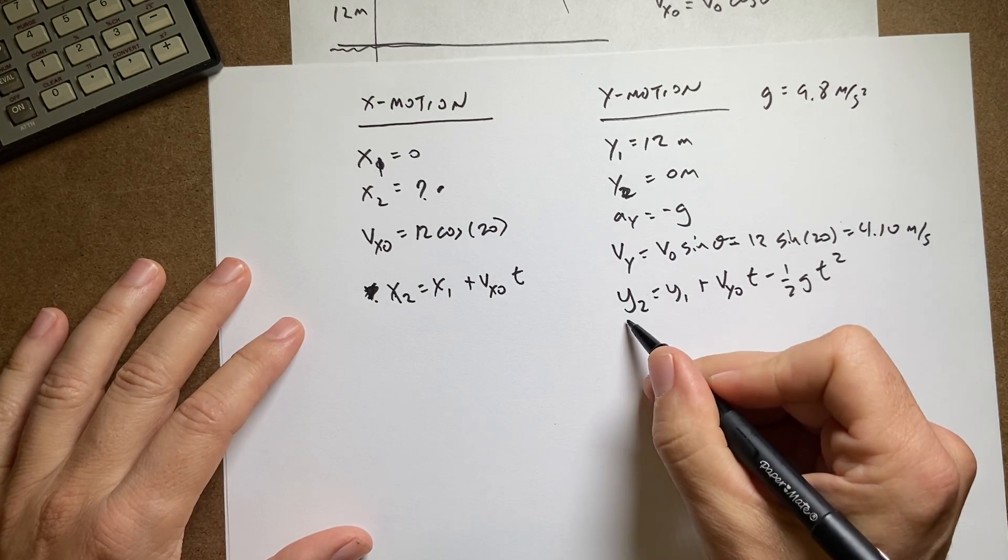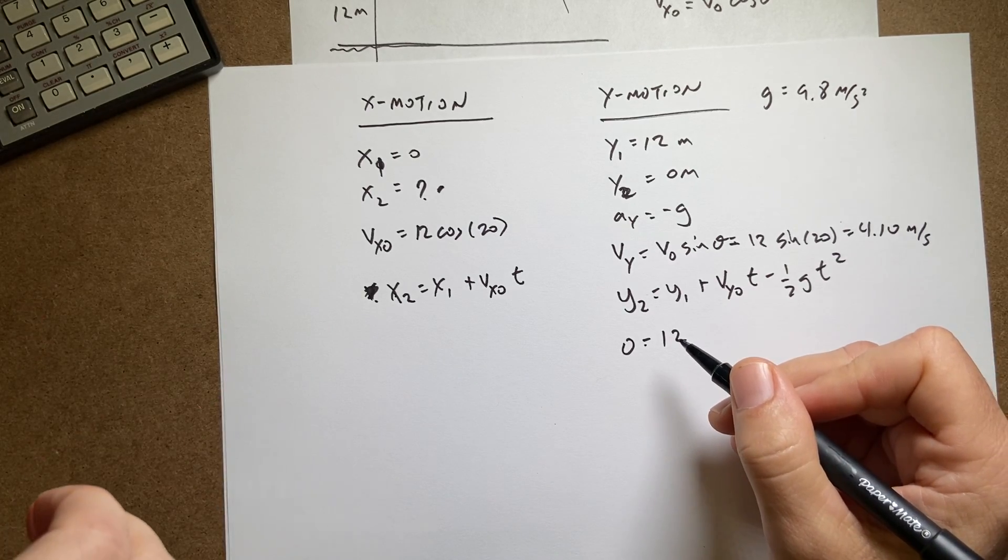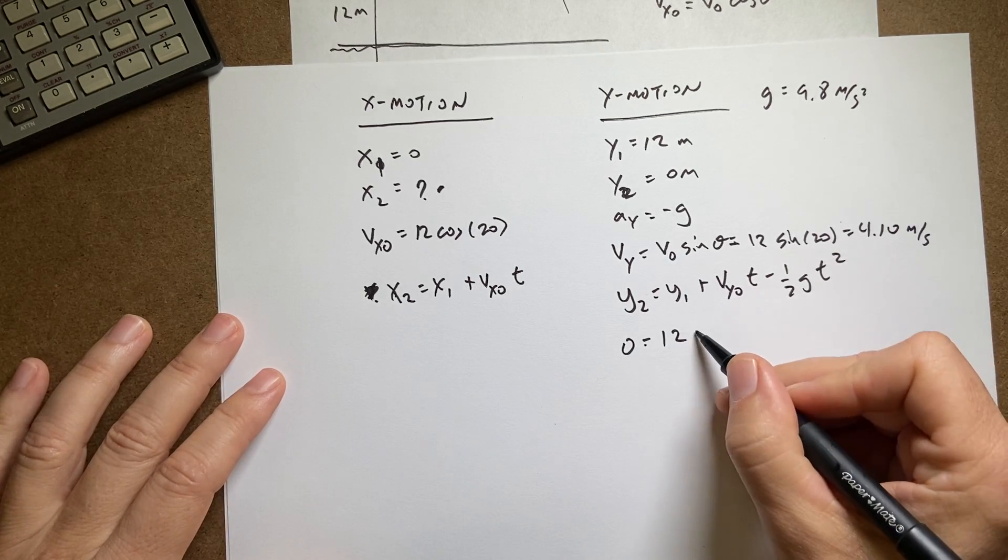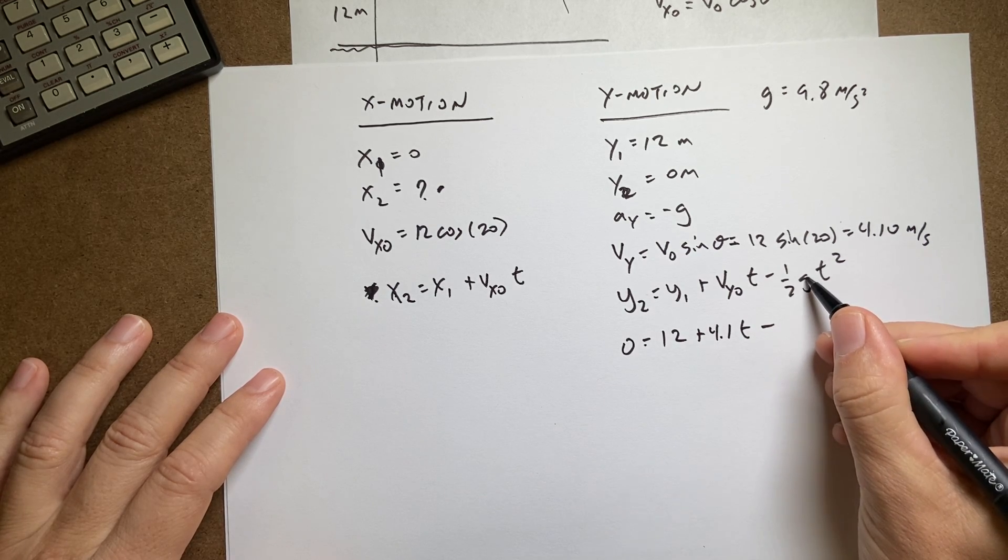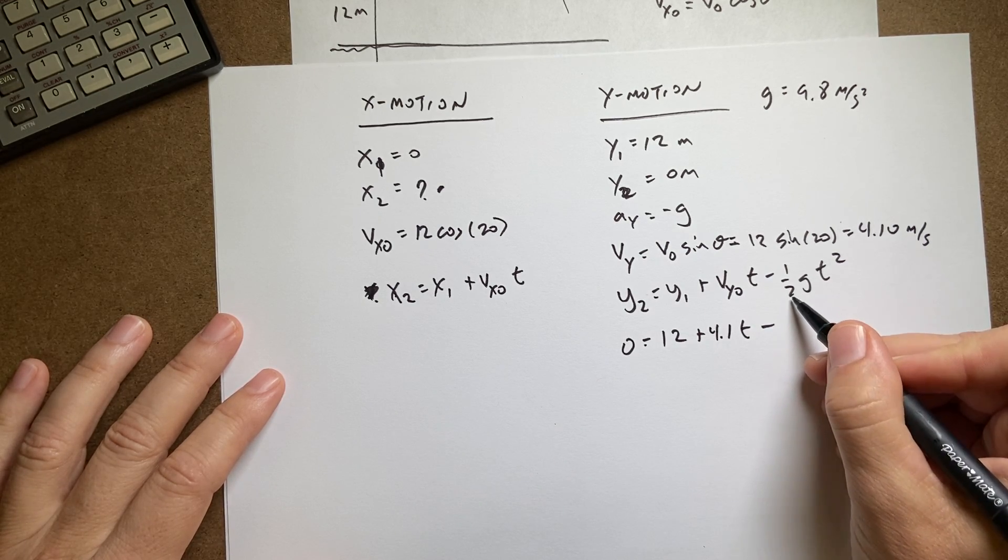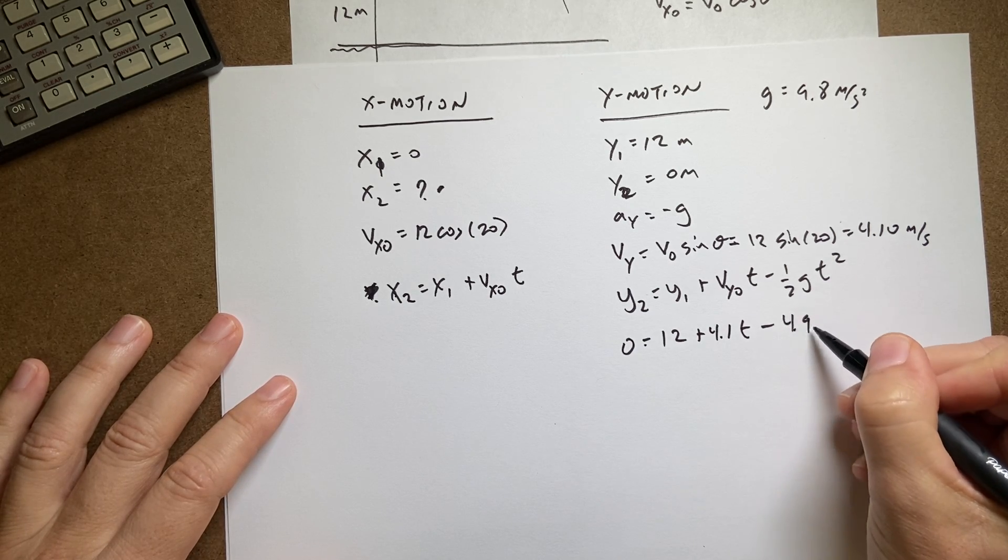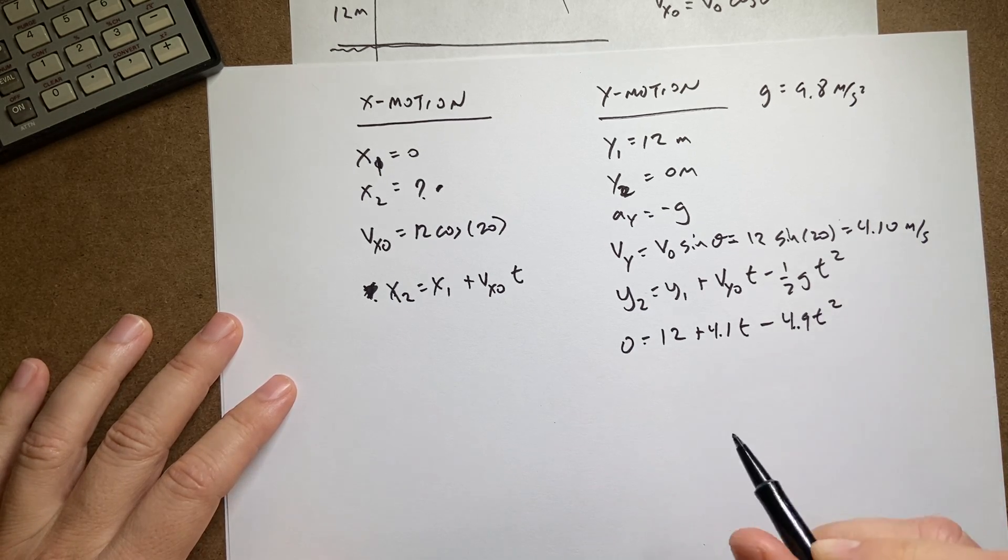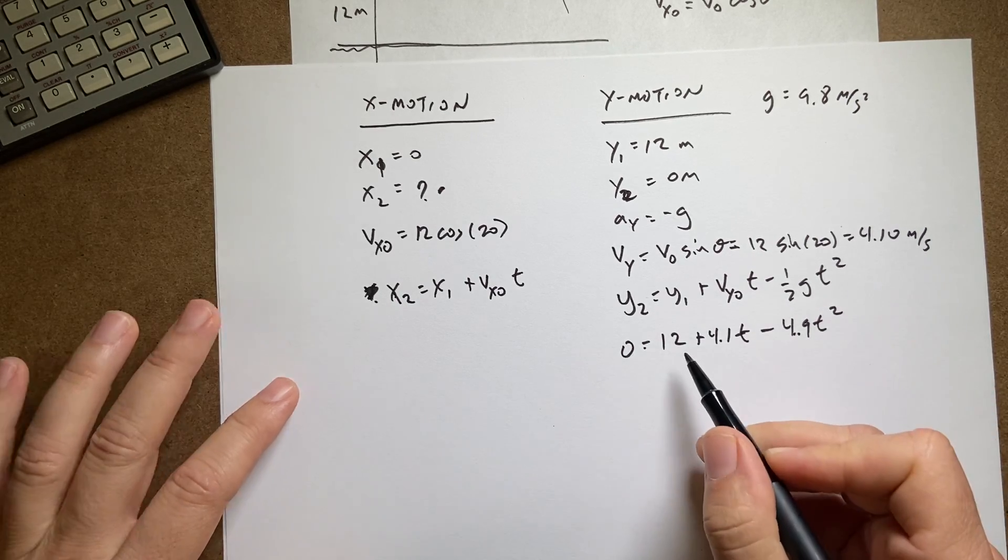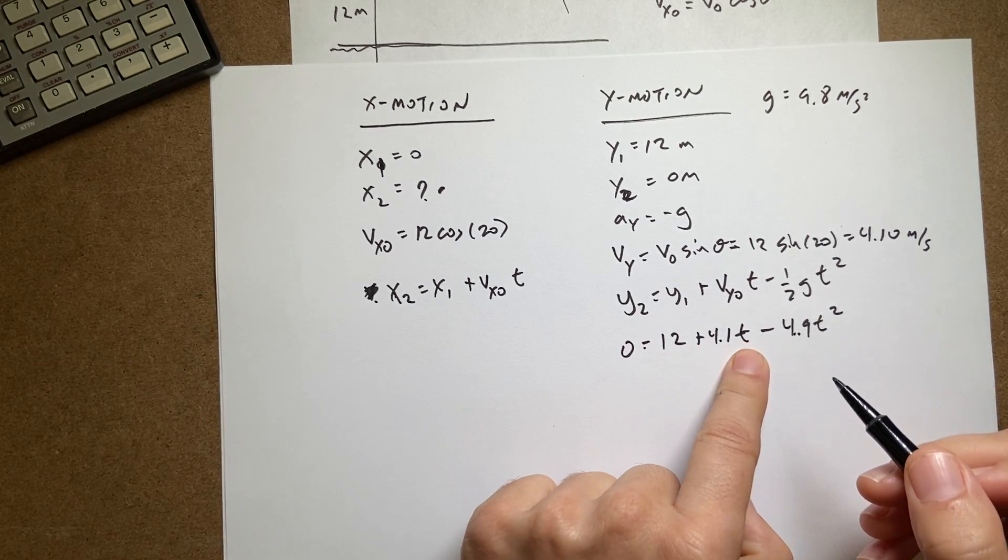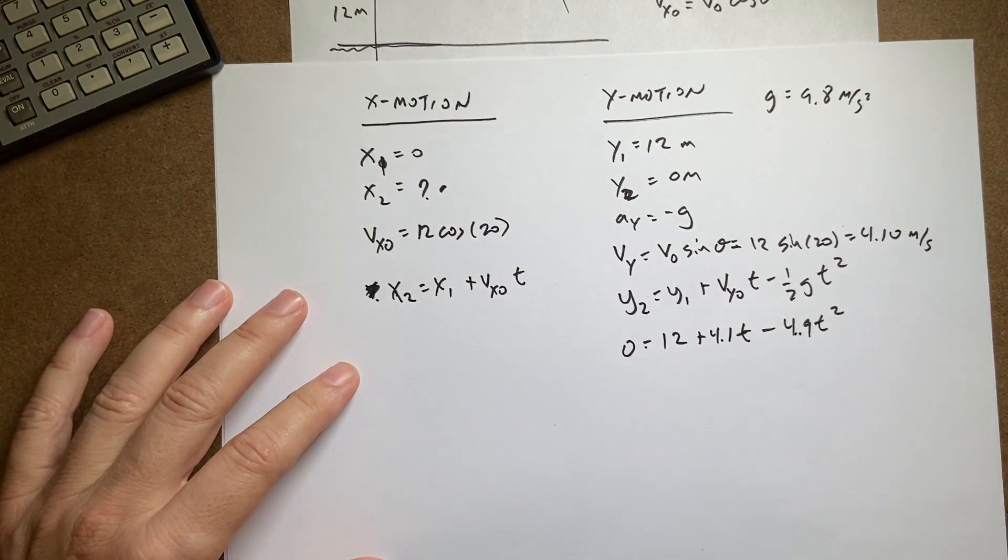Now I can write down the kinematic equation in the y direction. y2 equals y1 plus vy0 t minus one half g t squared. Let's put in all our values. So the y2 is zero. This is 12. This is plus 4.1 t minus, now I have 9.8 times one half. So that's minus 4.9 t squared.